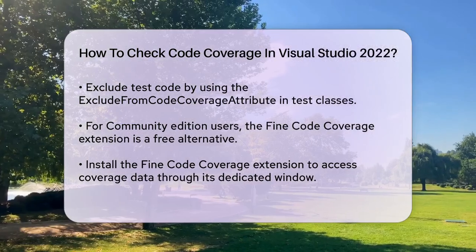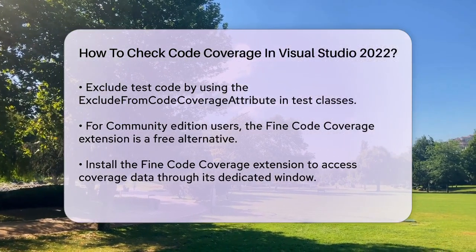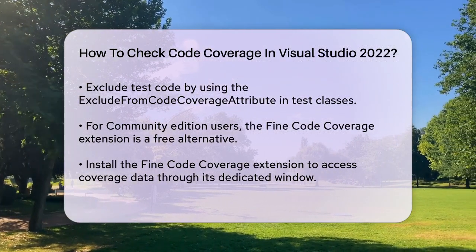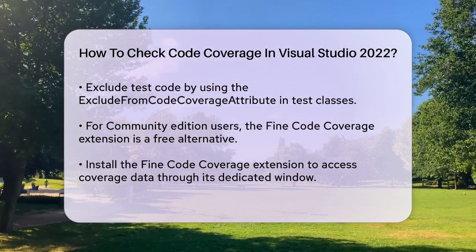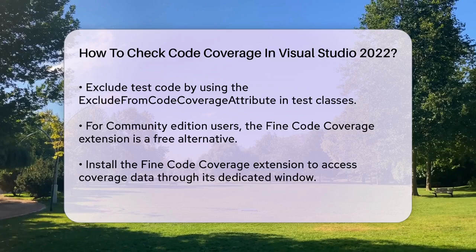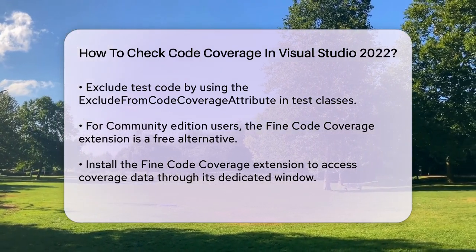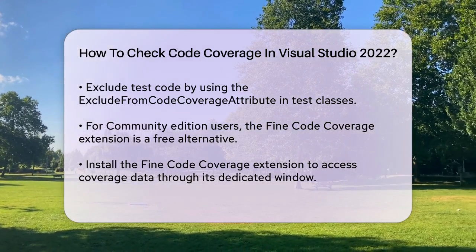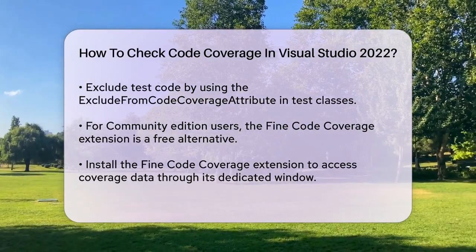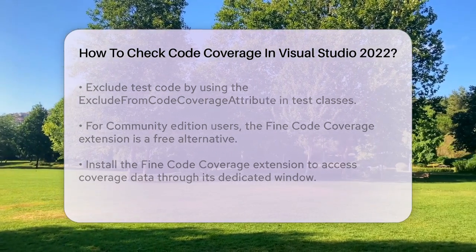Running your tests will populate this window with coverage data, showing you which lines of code need more testing. To optimize your code coverage, make sure to turn off compiler optimization, use a debug build for unmanaged code, and generate symbol files — PDB files — for each assembly. These steps help ensure accurate coverage results.